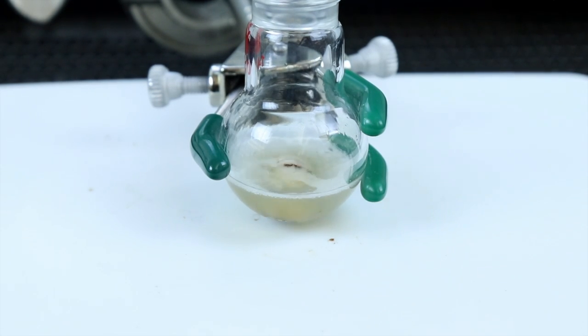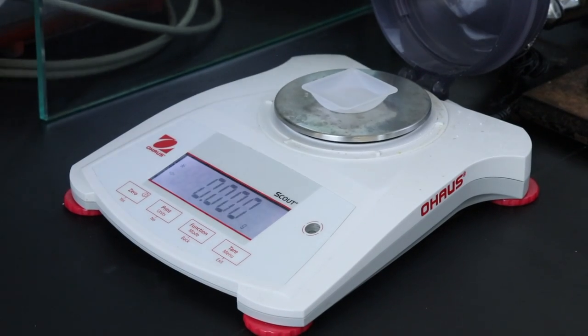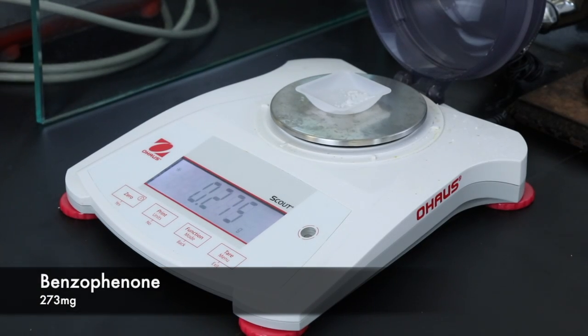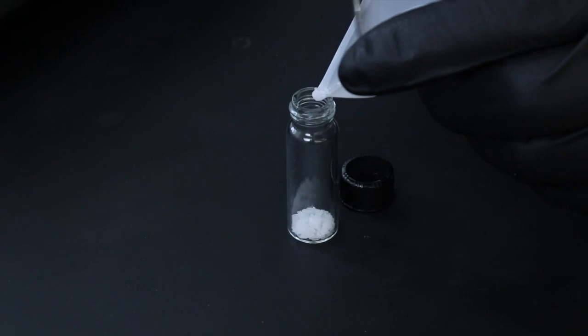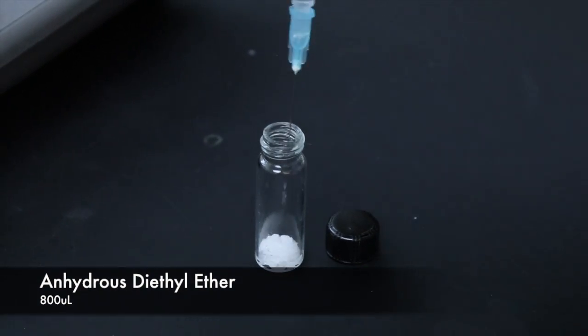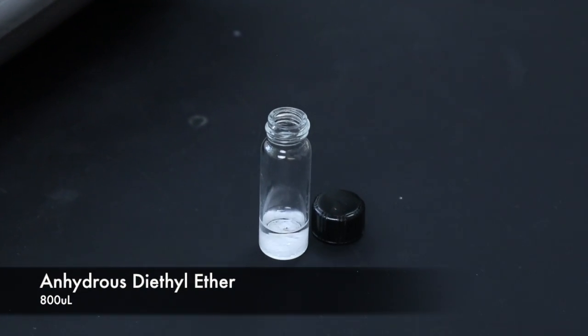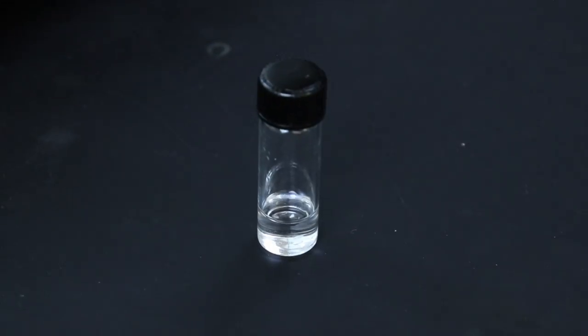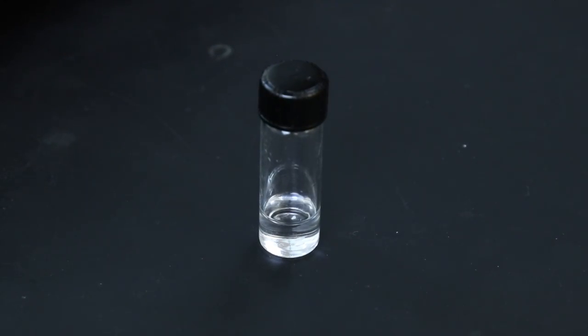So we'll let that react for 15 to 20 minutes, and in the meantime, start preparing the benzophenone solution. I'll weigh out 273 milligrams, and add it to a dram vial, where I can dissolve it in some ether. I'll add 800 microliters of anhydrous diethyl ether, and shake it up until all the benzophenone is dissolved in the solution.